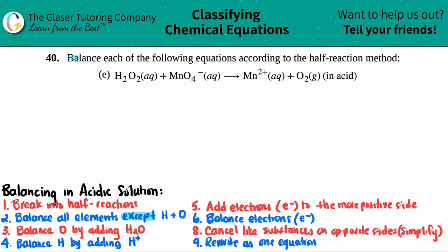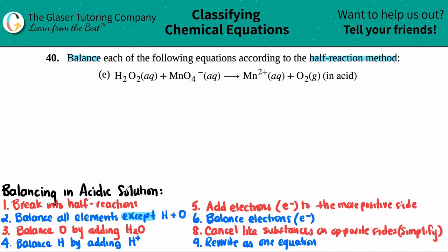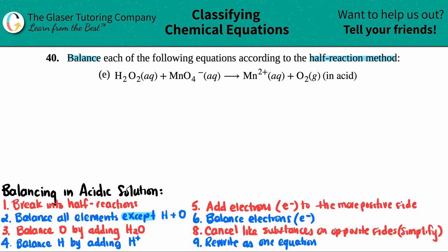Number 40: balance each of the following equations according to the half-reaction method, and then we have letter E. We have to balance hydrogen peroxide, H₂O₂ aqueous, plus permanganate ion MnO₄⁻, and that will yield manganese ion Mn²⁺, and then oxygen, O₂ gas, and we have to do this in an acidic solution.